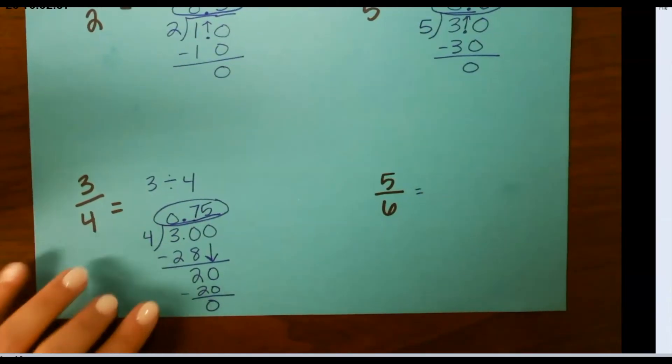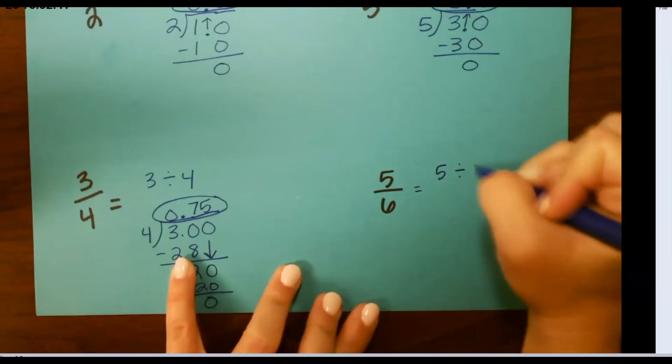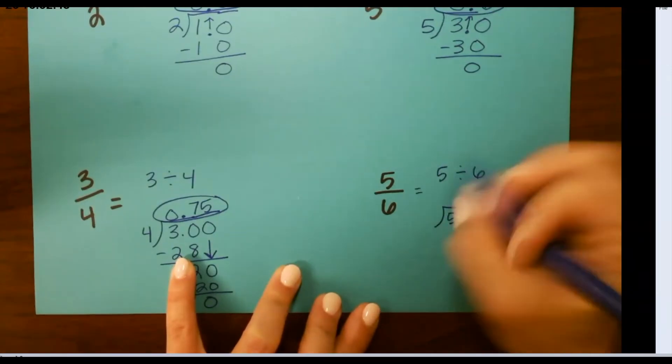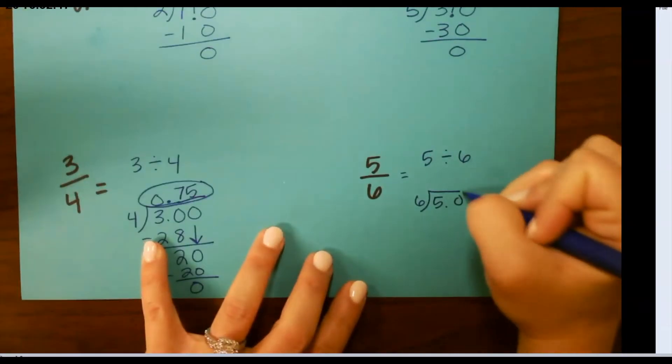For our last one, let's see what happens when we can't get an even decimal. 5 divided by 6. So we add our decimal and our 0.